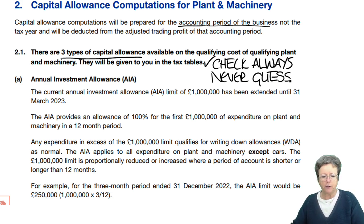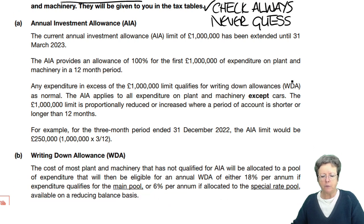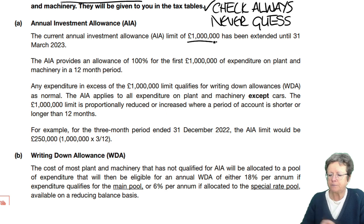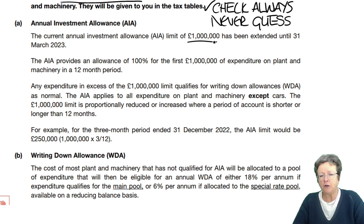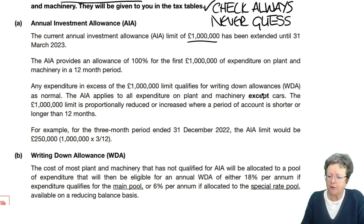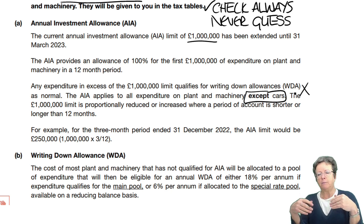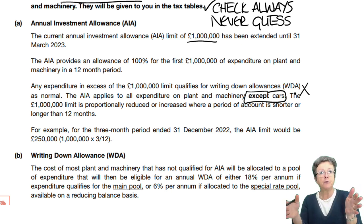The first one is the Annual Investment Allowance, which is the AIA. It's currently a million pounds. It provides an allowance of 100% of a million pounds worth of expenditure on plant and machinery in a 12-month period. Any expenditure in excess of a million pounds qualifies for a written-down allowance. You can have it on all expenditure except cars. If your accounts are less than 12 months, you have to pro-rata it down; if more than 12 months, pro-rata it up.